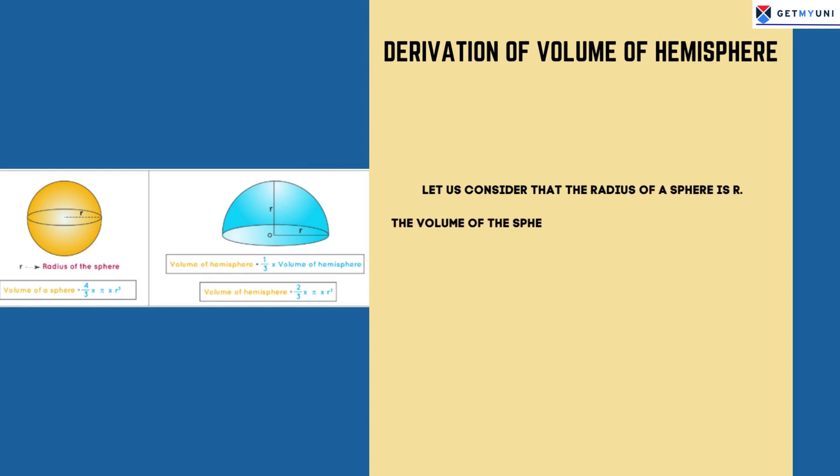Let us consider that the radius of a sphere is r. Volume of sphere equals 4 pi r cube by 3. So the volume of hemisphere equals 1 by 2 of 4 pi r cube by 3, which equals 2 pi r cube by 3.